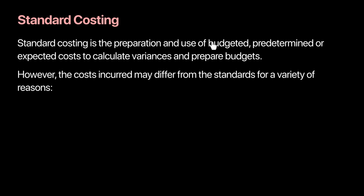We first use the preparation of budgeted or predetermined costs to help us calculate variances. Variances are determined by comparing our budgeted cost with the actual cost incurred. Standard costing basically helps a firm understand and compare what it expected the cost of a resource to be versus what the actual cost was.